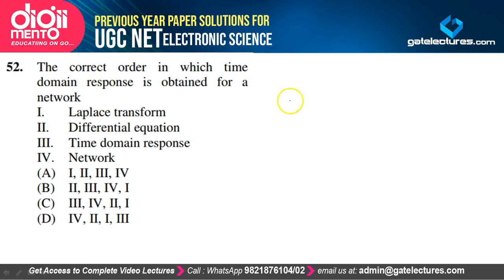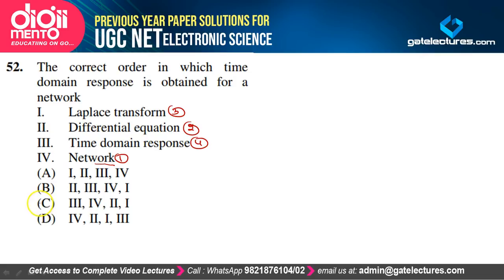Correct order to obtain time domain response for a network: first, network analysis; second, form the differential equation; third, apply Laplace transform; fourth, obtain time domain response. Option D is correct.